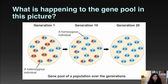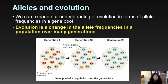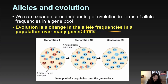This picture shows that in the initial generation there was a pretty even mix of dominant and recessive alleles. Over many generations the disadvantageous dominant allele decreases and essentially goes away. This change over time is evolution. We can now redefine evolution in terms of allele frequencies: evolution is a change in the allele frequencies in a population over many generations.